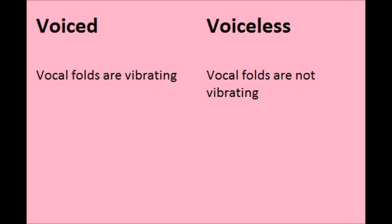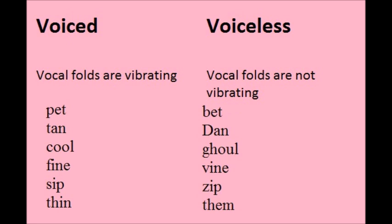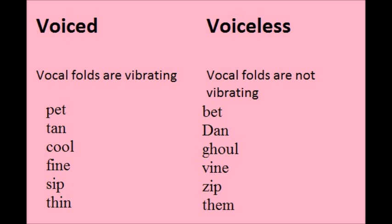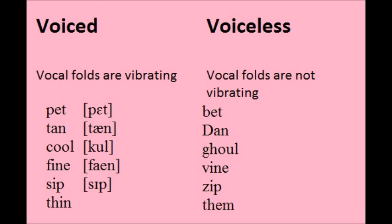English has a two-way distinction for many consonants: they are either voiced or voiceless. Concentrate on the initial sounds in the following words and try to find the initial sound on the IPA chart. Notice that when the sounds appear in pairs on the chart, the symbol on the left is voiceless and the symbol on the right is voiced. The following words all begin with voiceless sounds, and the following words all begin with voiced sounds.